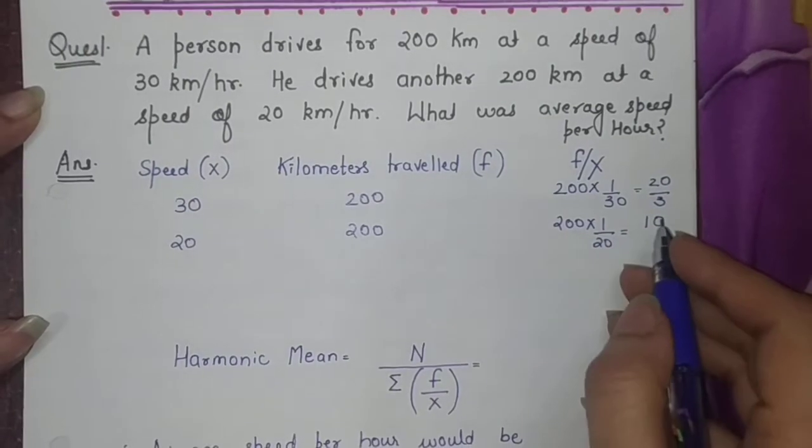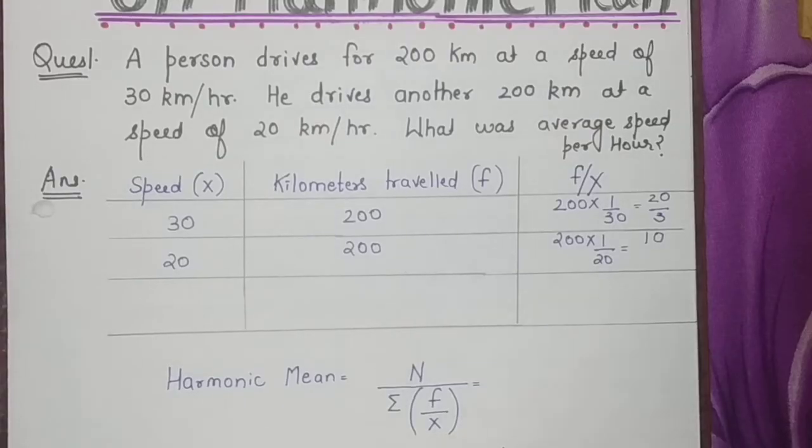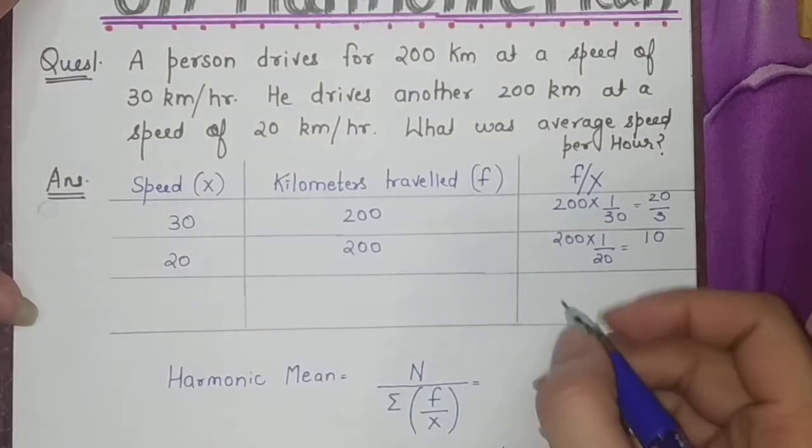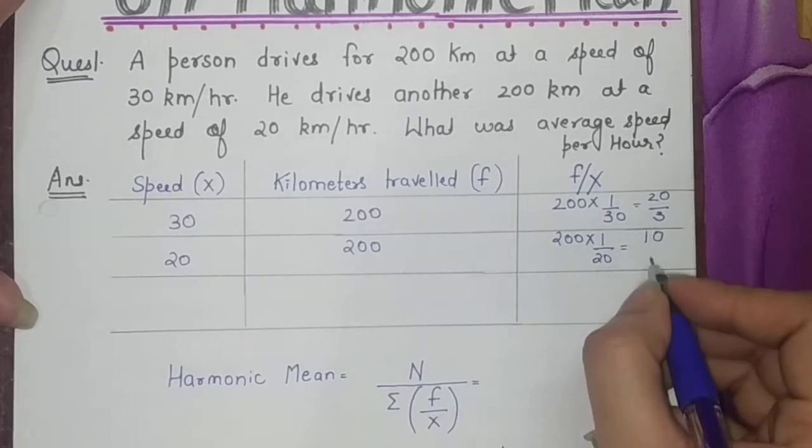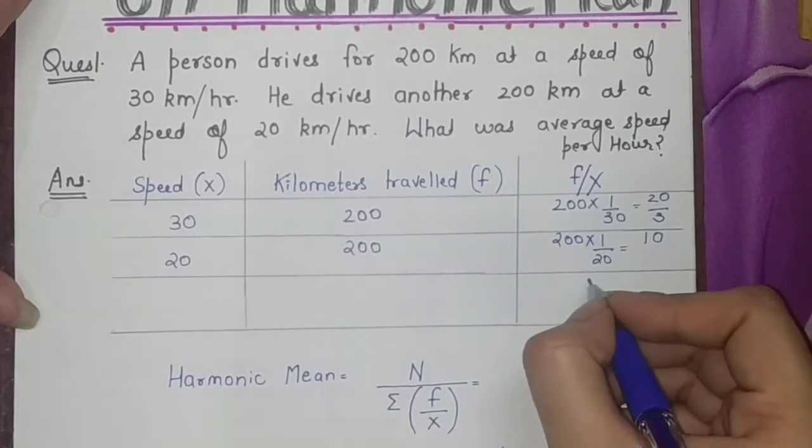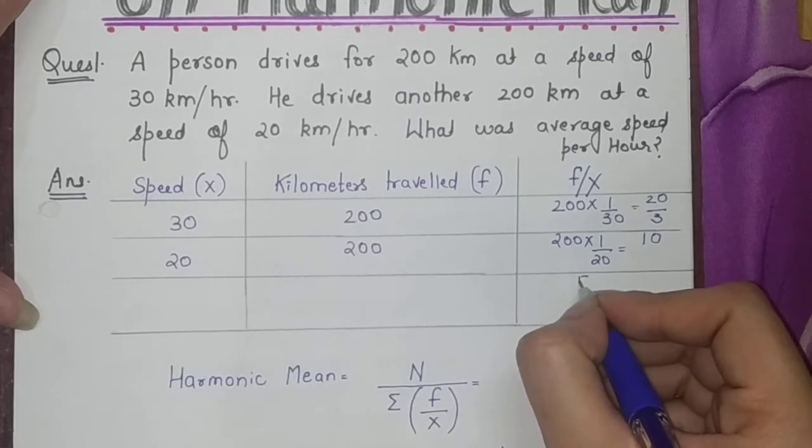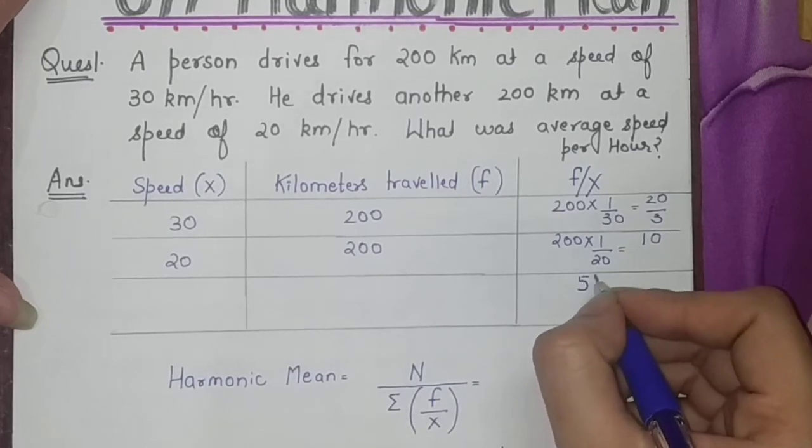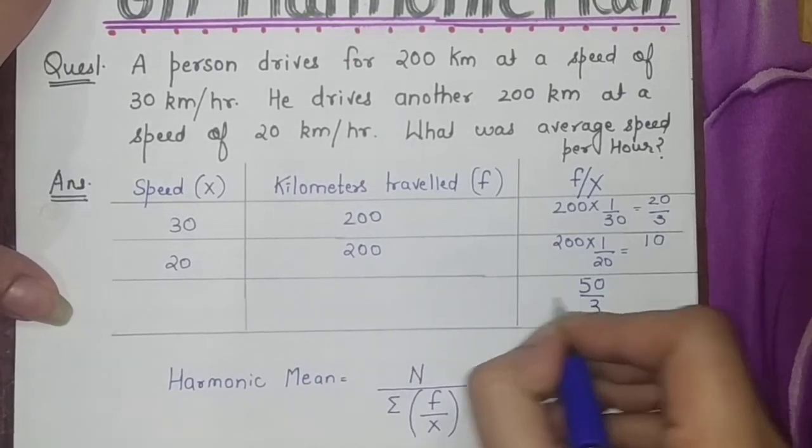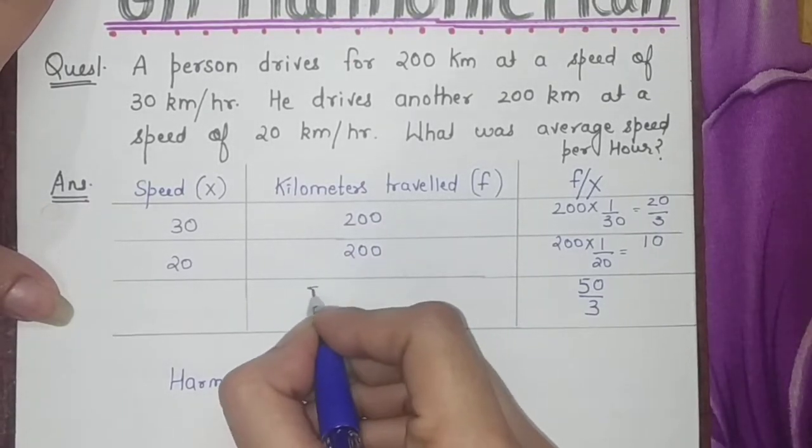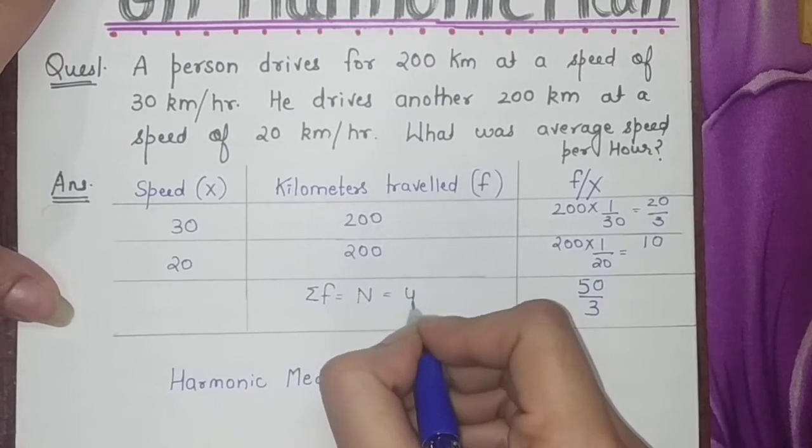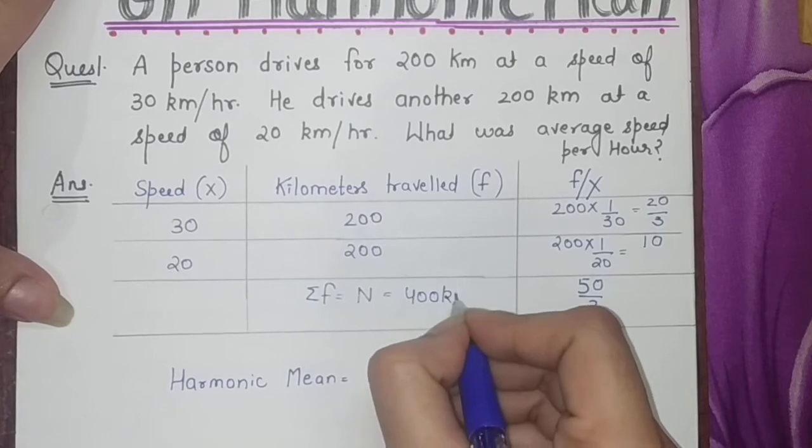For better clarity I have drawn the lines in between them to make them into a form of a table. Now we'll add this column f/x. It will become 20 by 3 plus 10. By taking LCM it will become 20 plus 30 by 3, that is 50 by 3. And the sigma of frequency, which is also n, is equal to 400 kilometers.